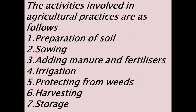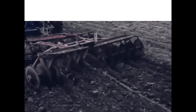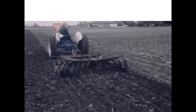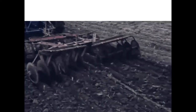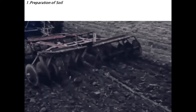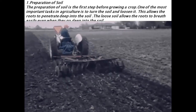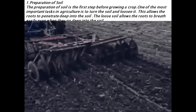How does a farmer prepare his field for sowing of crops? Let us learn in detail about preparation of soil and sowing in today's class. Here the farmer is loosening the soil. This is the first step in preparation of soil. One of the most important tasks in agriculture is to turn the soil and loosen it, which allows the roots to penetrate deep.